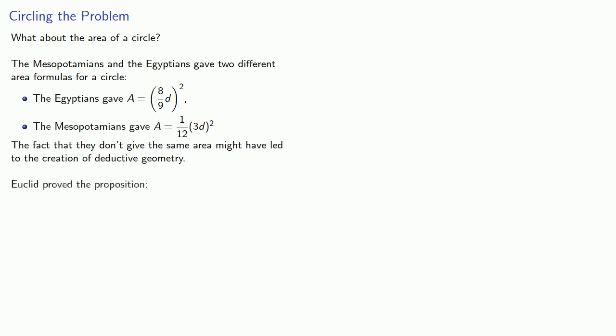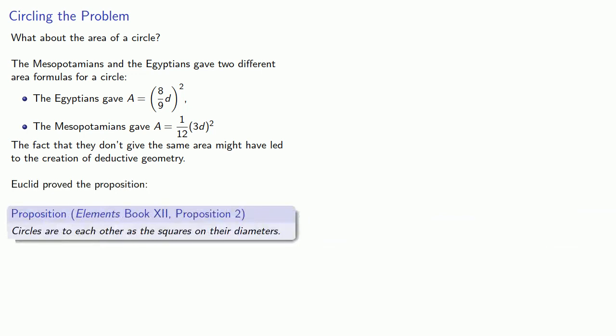Euclid proved the proposition that circles are to each other as the squares on their diameters, and this corresponds to A equals K D squared. But what's K? And this leads us to the work of Archimedes.